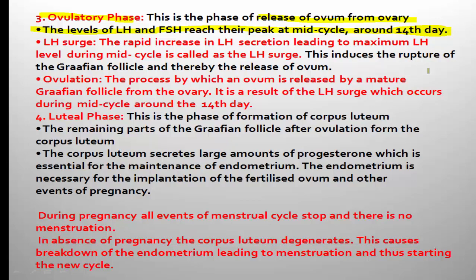The third phase is the ovulatory phase — the phase of release of ovum from the ovary. During this phase, the levels of LH and FSH reach their peak at mid-cycle, around the 14th day. Ovulation occurs on the 14th day because, in a 28-day cycle, the 14th day is the mid-cycle period. On the 14th day, there is a rapid increase in the level of LH — this is called the LH surge.